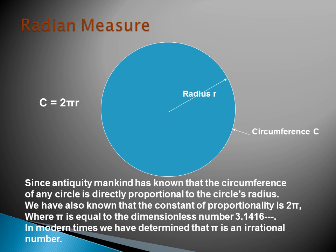The radian measure is based on the relationship between the circumference and the radius of a circle. Since a long time ago, mankind has known that the circumference of any circle is directly proportional to the circle's radius. That constant of proportionality is 2 pi, where pi is equal to the dimensionless number 3.1416. In modern times, we have determined that pi is an irrational number.